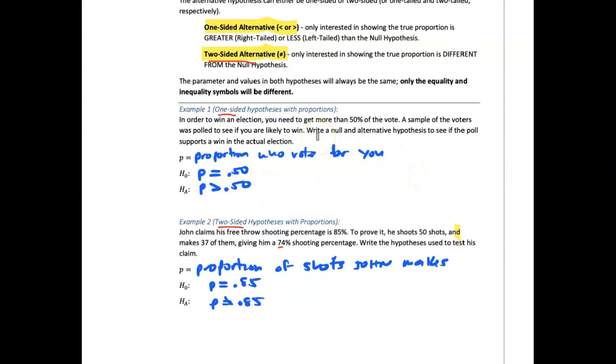So in this case here, in order to win an election, we need to get more than 50% of the vote. Sample voters were polled to see if you're likely to win. Now, you collect some data. The null hypothesis, null meaning like nothing's different, nothing's different from the value. Look up that word N-U-L in the dictionary.